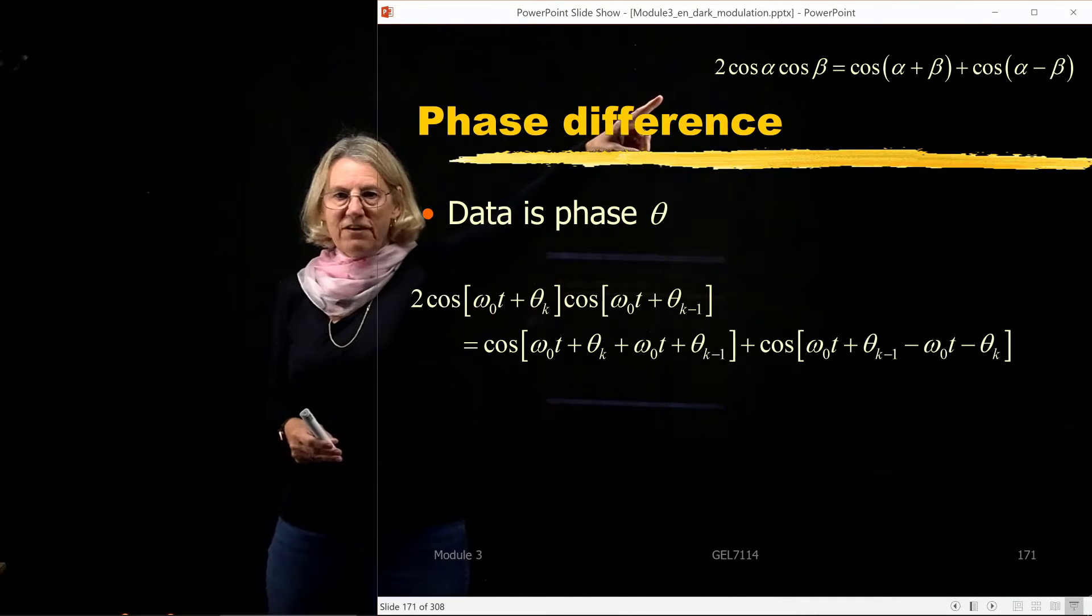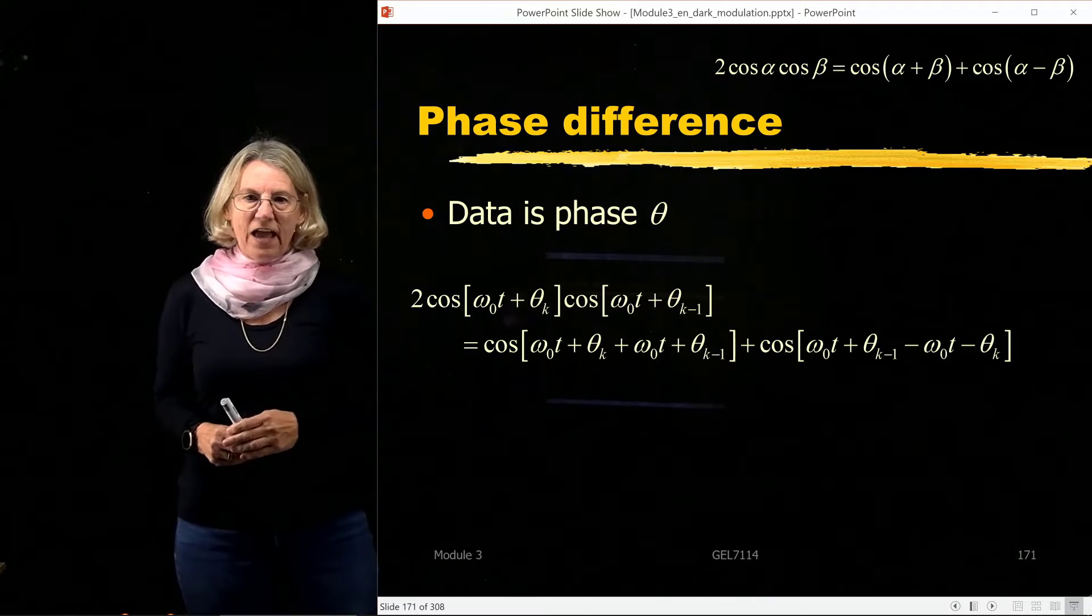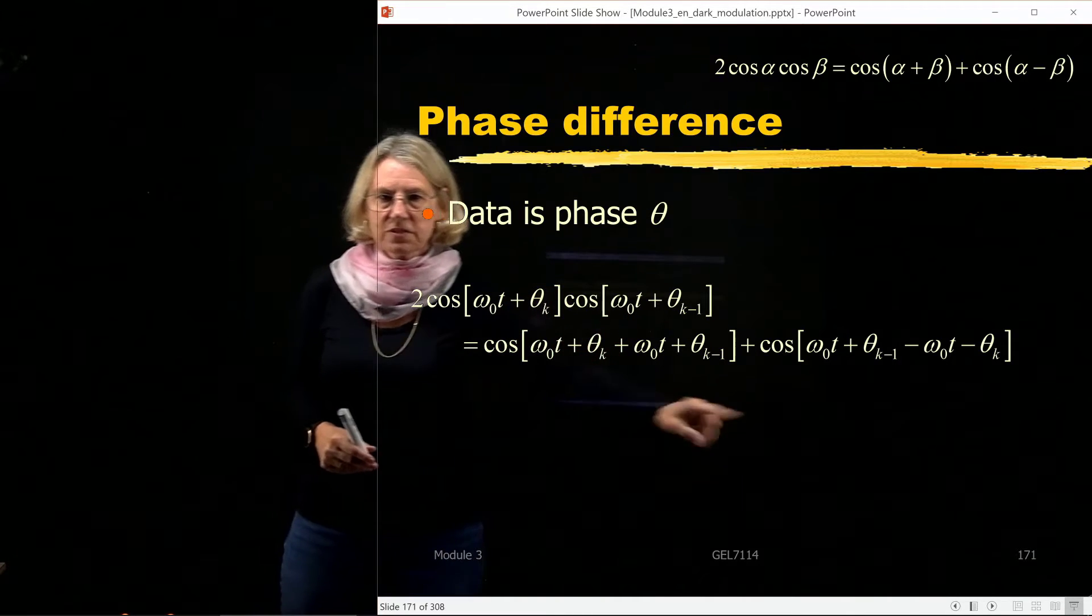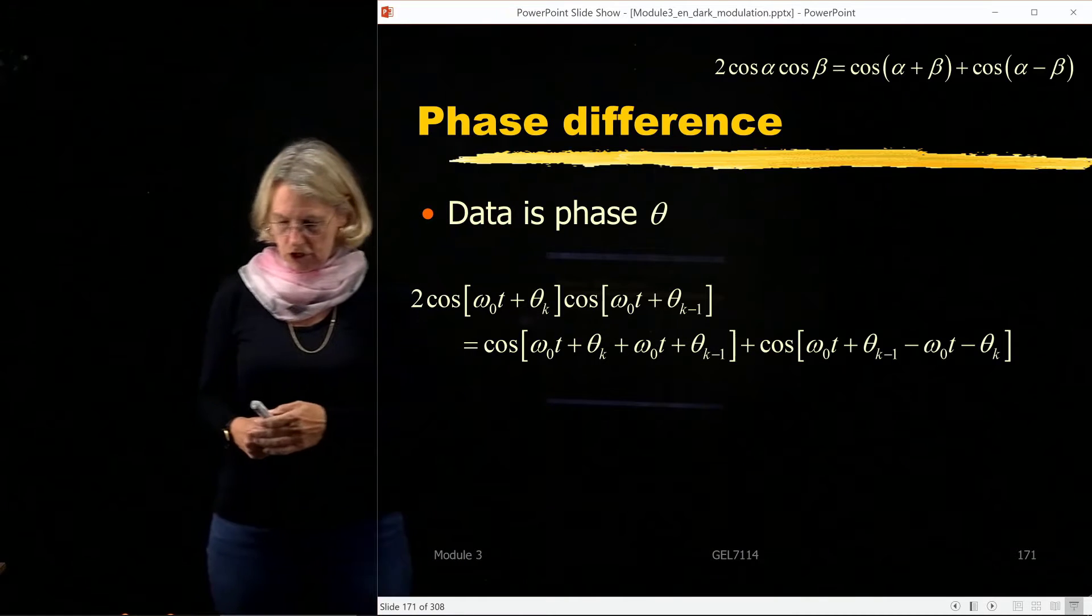Now I go back to my favorite trigonometric identity, and I know that this will generate two terms, one with the sum of these terms, and the other one with the difference of the two terms.